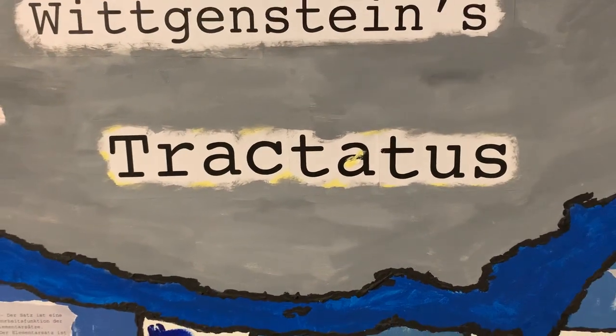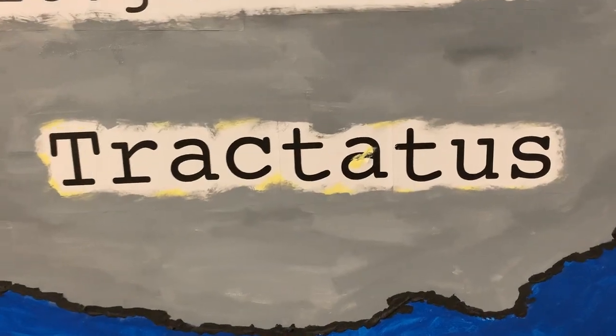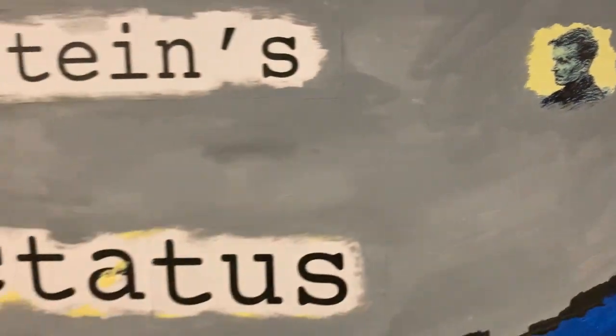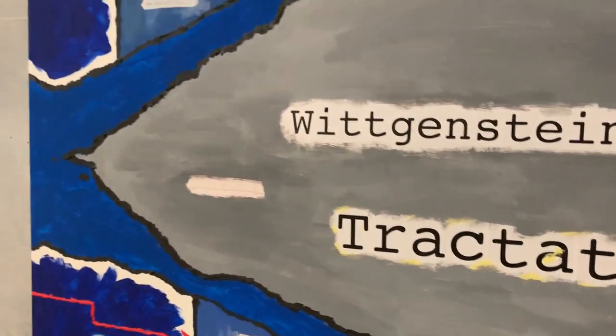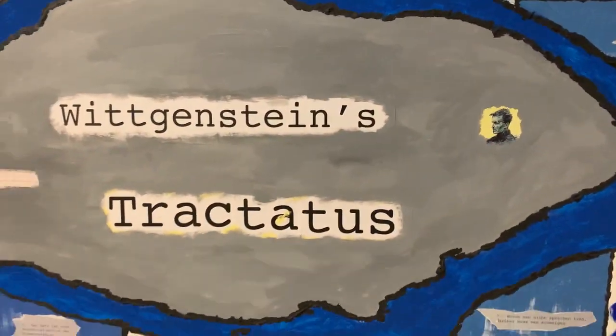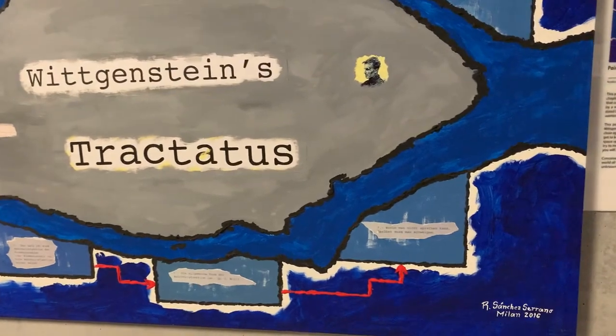The Tractatus is Wittgenstein's most important publication, actually the only one that was published in his lifetime. This is Ludwig Wittgenstein, and the exhibition is going to explore the seven chapters that conform the Tractatus, and every painting has also an explanatory panel.